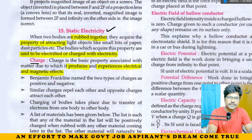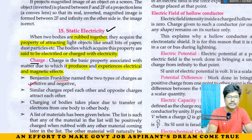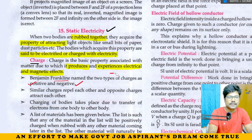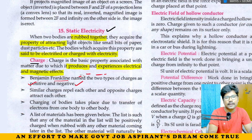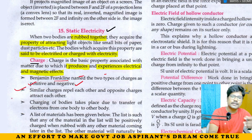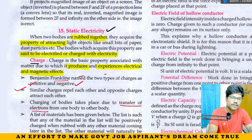Benjamin Franklin defined charges into two types: positive charge and negative charge. Similar charges repel — positive repels positive, negative repels negative. Unlike charges attract — positive and negative attract each other. Charging of bodies takes place because of transfer of electrons from one body to another. That is how charge is transferred.